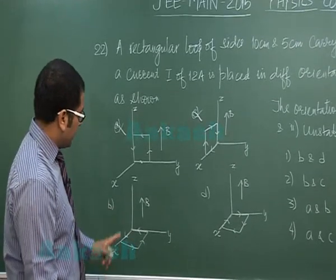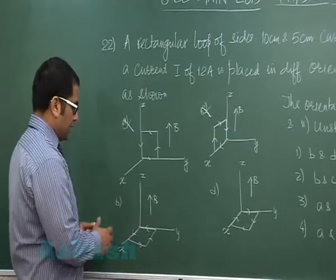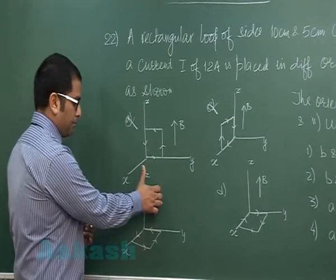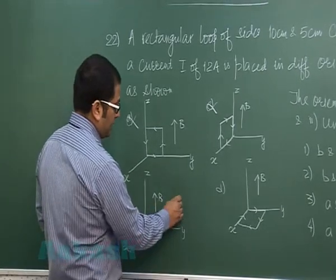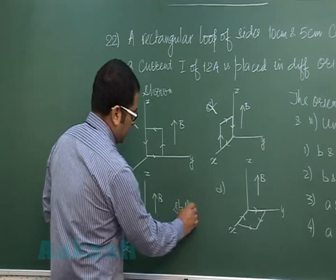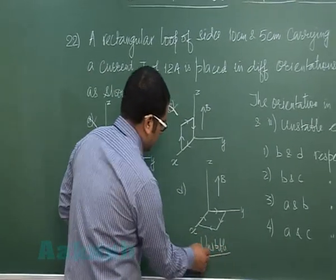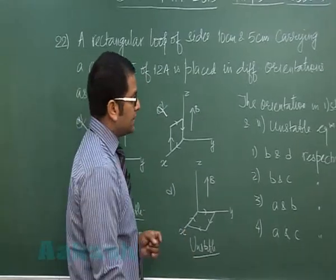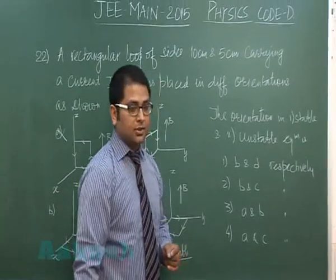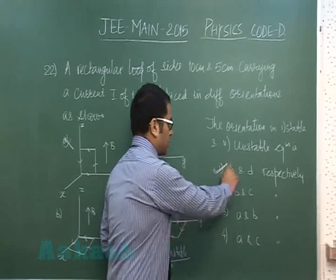Now if we see in case number B, the magnetic moment is up and B is up, so parallel, so it's a case of stable. Likewise this is the case of unstable. So B is in stable equilibrium, D is in unstable equilibrium. So that will lead us to option number 1.